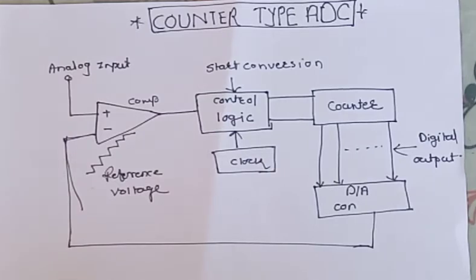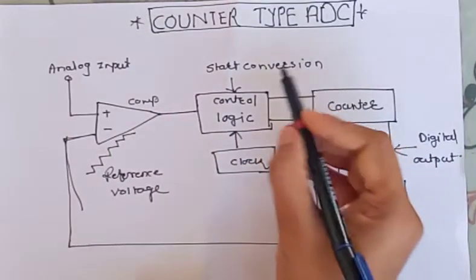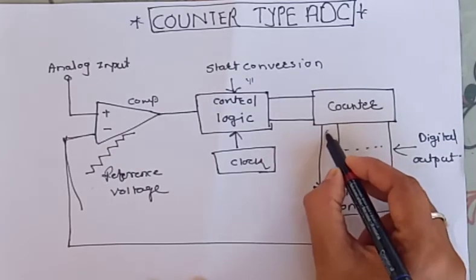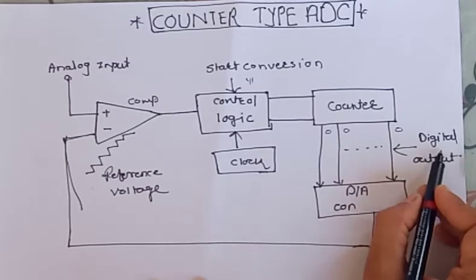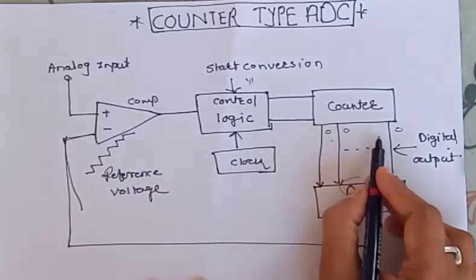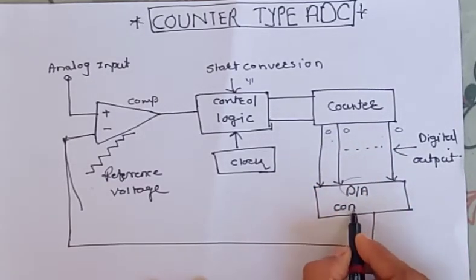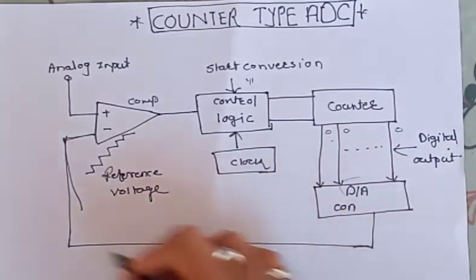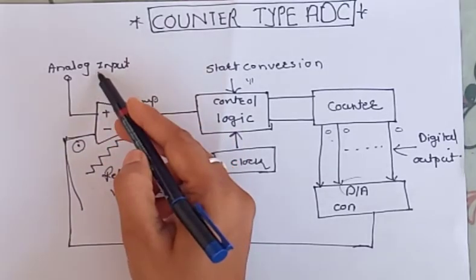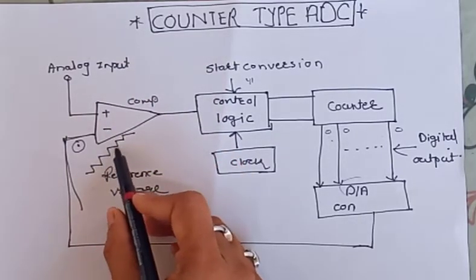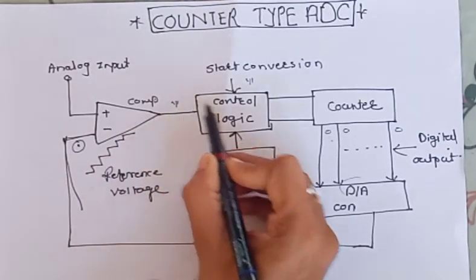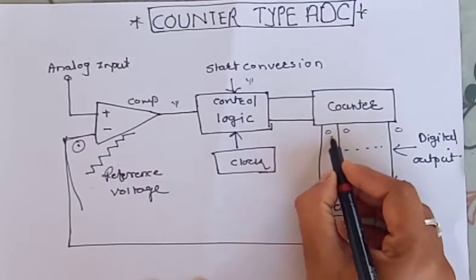Whenever you want to start the conversion, the start conversion signal must be high, then the clock is applied to the control logic. Whatever the initial status, suppose 00, this status is applied at the output. The digital to analog converter converts this digital output into analog form and it is applied to the comparator, where it is compared with the analog input and the reference voltage.